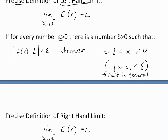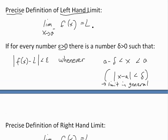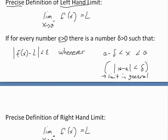In limits in general from my earlier video, the only difference is that this part would be: absolute value of x minus a is less than delta — meaning it's on either side. But for this left-hand limit, we're only looking at the left side of a. I'll illustrate this with a graph after recapping the precise definition of the right-hand limit.